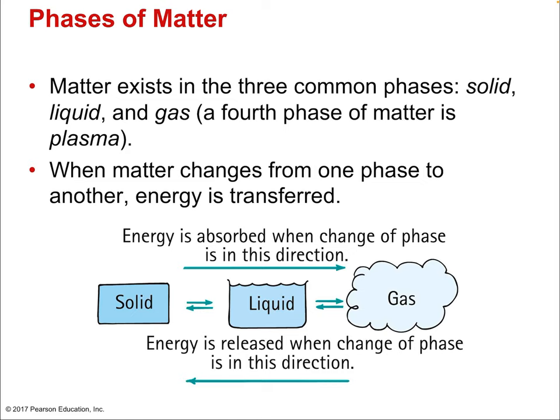Now let's wrap up with phases of matter. The three common phases are solid, liquid, and gas. A fourth phase is plasma — an ionized gas. When matter changes from one phase to another, energy is transferred. Going from solid to liquid to gas involves absorption of energy. Going from gas to liquid to solid involves release of energy. Evaporation is a change of phase from liquid to gas — it's absolutely a phase change and requires absorption of energy.